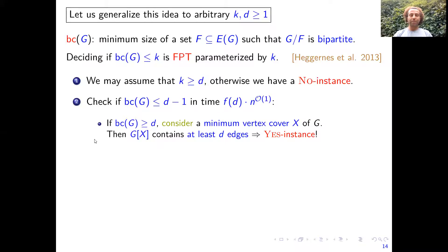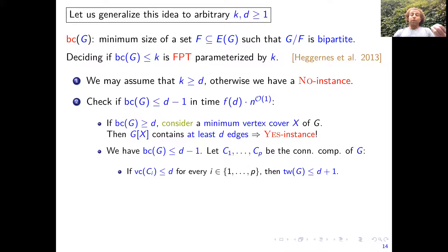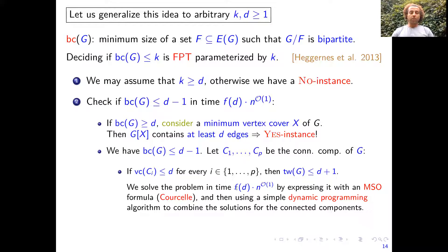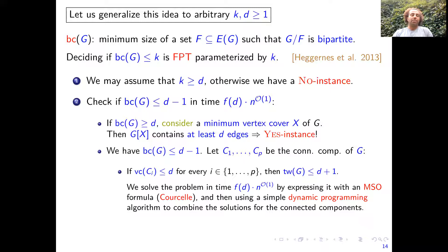We can now assume the bipartite contraction number is at most d minus one. We consider the connected components of G and distinguish two cases. If for every component the vertex cover number — computed by an FPT algorithm parameterized by d — is at most d, then the treewidth of the whole graph is bounded by a function of d. We solve the problem in FPT time by expressing it as an MSO formula and applying Courcelle's theorem, then combining solutions for each component via dynamic programming.